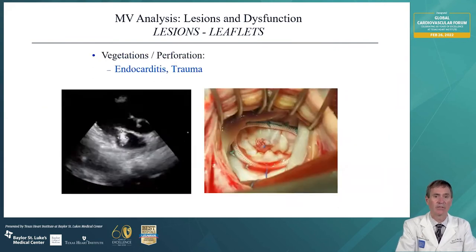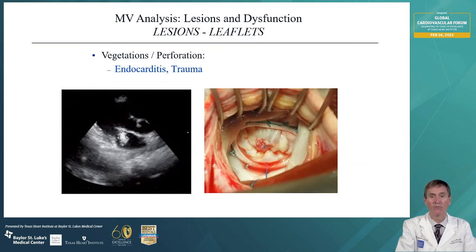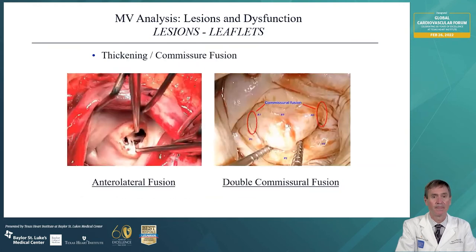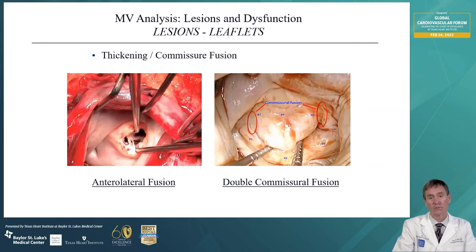Vegetations or perforations can occur from endocarditis, rarely trauma in the mitral valve position. Here you can see a vegetation that we excised and did a patch reconstruction with a piece of bovine pericardium or native pericardium. Again with rheumatic disease we can get thickening or commissural fusion. The left picture demonstrates anterolateral fusion, or it can occur in both commissures. If the leaflets are pliable otherwise, this is a patient we could do a repair in. There are also techniques for peeling off some rheumatic disease, not too common in the United States but done occasionally in other countries.